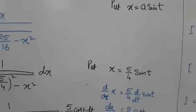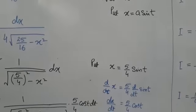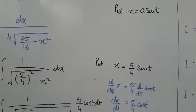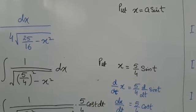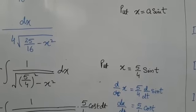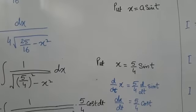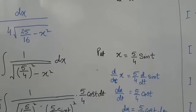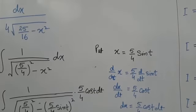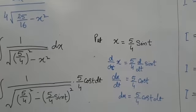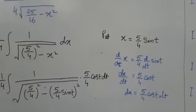We put x = (5/4)·sin(t). Differentiating, dx/dt = (5/4)·cos(t), so dx = (5/4)·cos(t) dt.